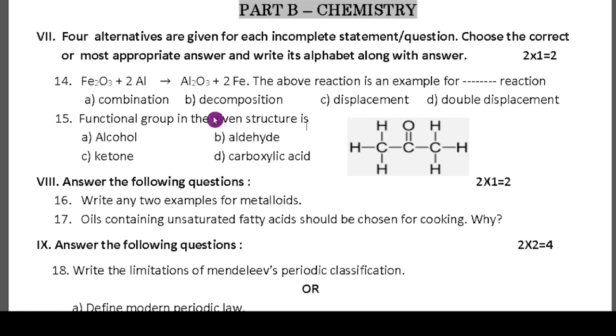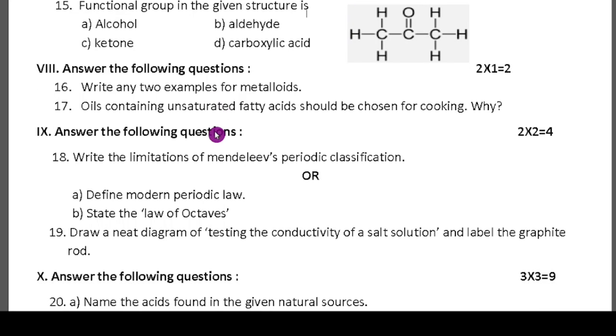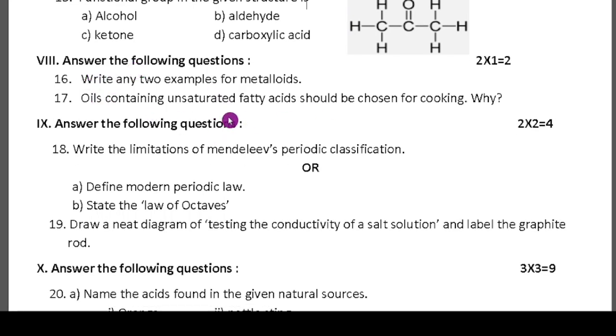Part B is chemistry. Here also two multiple choice questions are there, which is the exact answer you have to mark. Next one is one marks question. Answer the following questions: write any two examples of metalloids. Next: oils containing unsaturated fatty acids should be chosen for cooking, why? Ninth main, eighteenth question: write the limitations of Mendeleev's periodic classification or define modern periodic law. State the laws of octaves. Here also very easy.